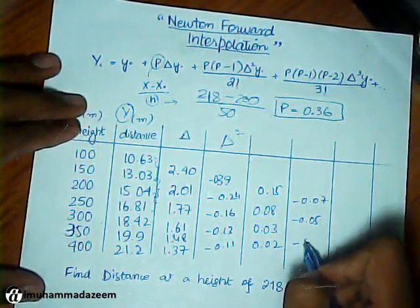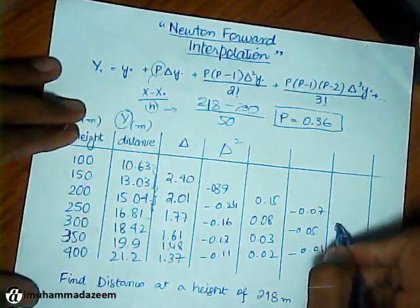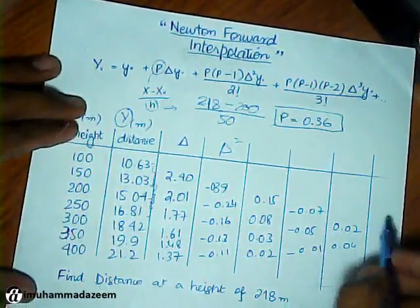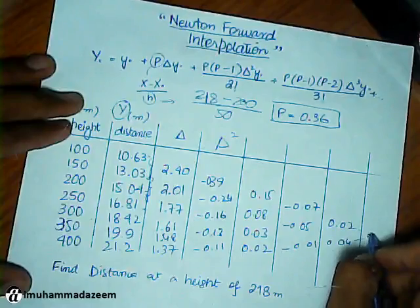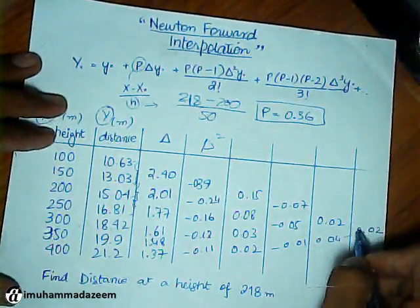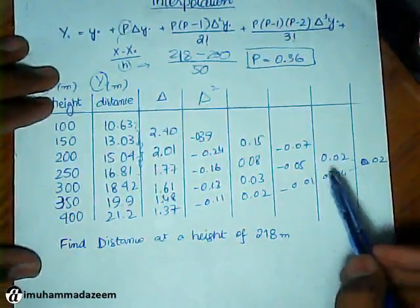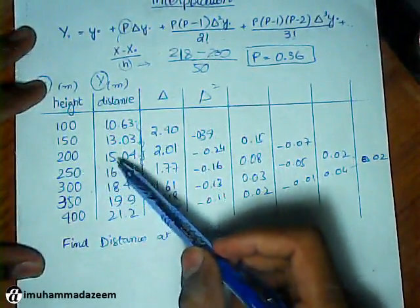Here we have minus 0.07, minus 0.05, and minus 0.01. Next is 0.02 and 0.04. The last difference is going to be 0.02.